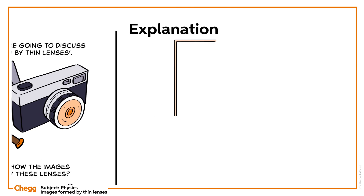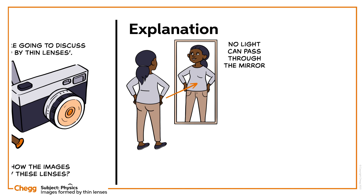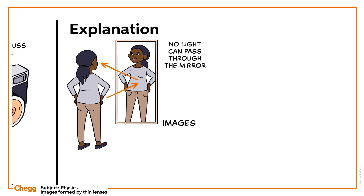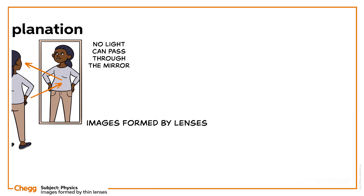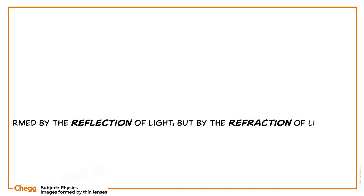Let's understand why we can see our images when we stand in front of a plain and curved mirror. In this case, the other side of the mirror is coated and so no light can pass through the mirror. Instead, the light gets reflected and shows the image of a person. On the other hand, the images formed by lenses are not formed by the reflection of light, but the refraction of light.